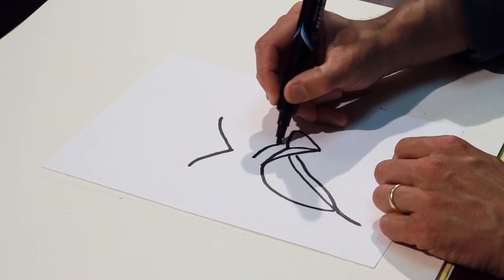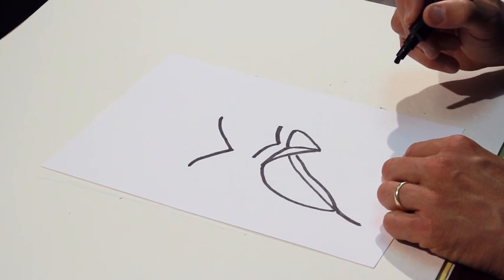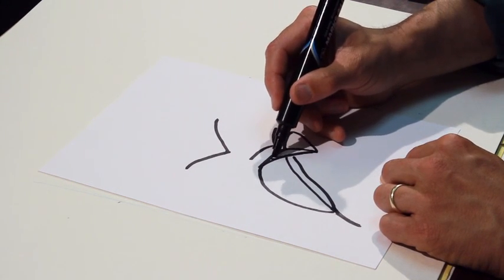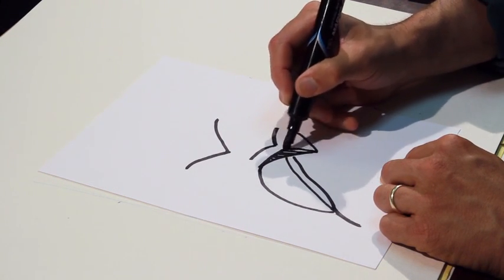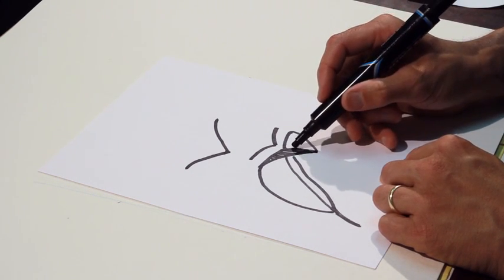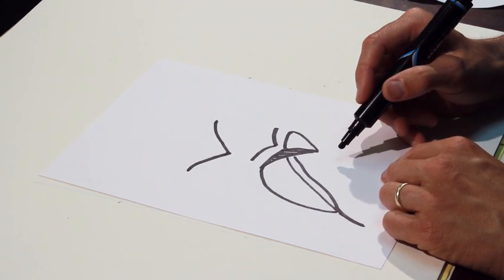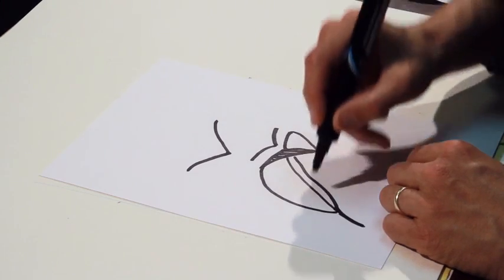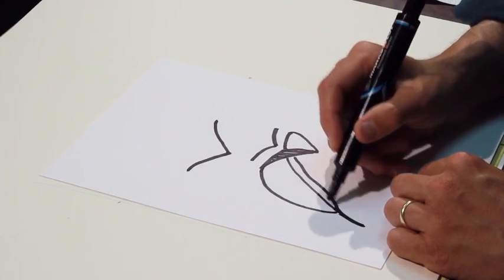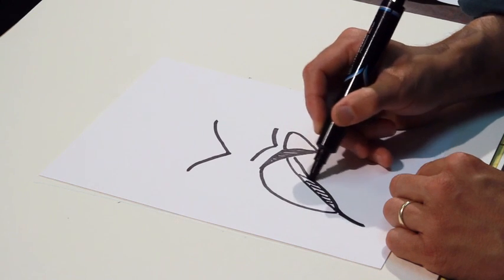So look for this V in the top of the leaf. Look for this top surface here to be narrower than its counterpart on the other side. And on the underside of the leaf, we're seeing exactly the same thing. There's a long side and there's a narrow side.